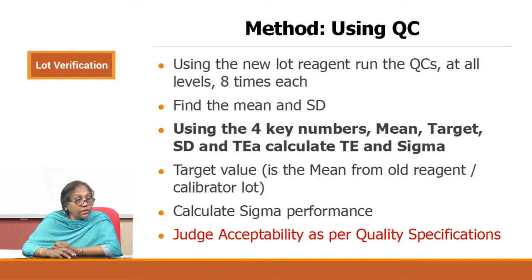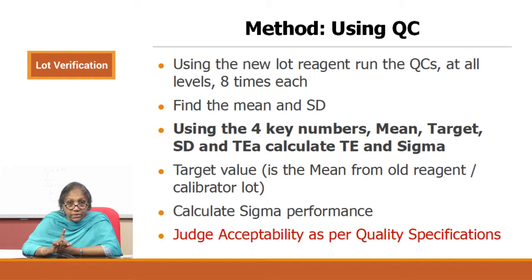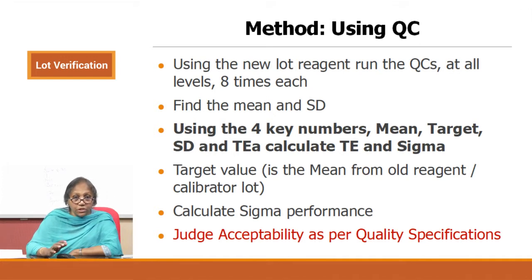Using the new lot reagent, run the QC at all levels. If you have three levels of QC, run all three, with at least 8 runs required. Find the mean and SD, and using the sigma and total error calculations, find your sigma matrix. The target value is the mean from the old lot — that is the key thing to remember — because you are trying to find the difference between the new and old lot. Then calculate the sigma performance and judge acceptability as per your protocol.